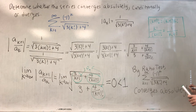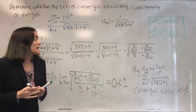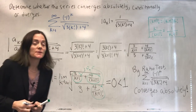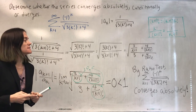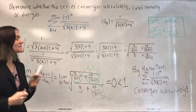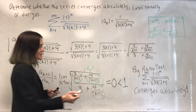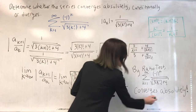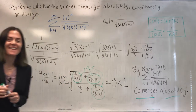It converges absolutely. Because we have established absolute convergence, we're finished. We don't need to do an alternating series test, because absolute convergence is much stronger. We have figured out that it converges absolutely.